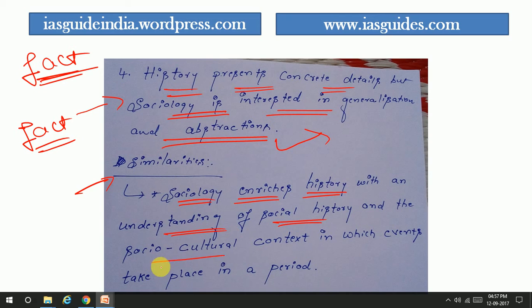When it comes to similarities, sociology enriches history with an understanding of social history and socio-cultural context in which events take place. Examples include Max Weber's study of the Protestant ethics and the growth of capitalism in Germany, and also the social background of Indian nationalism as an example of how sociology enriches history.